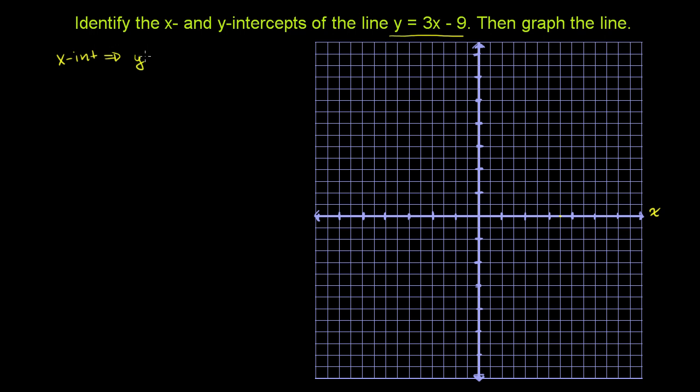So this means, literally, that y is 0. So we need to find the x-value defined by this relationship when y is equal to 0.